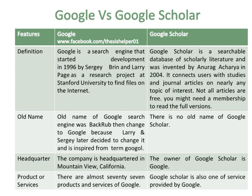The old name of the Google search engine was BackRub, then changed to Google because Larry and Sergey later decided to change it, inspired by the term 'googol.' There is no old name for Google Scholar. The company is headquartered in Mountain View, California, and the owner of Google Scholar is Google.